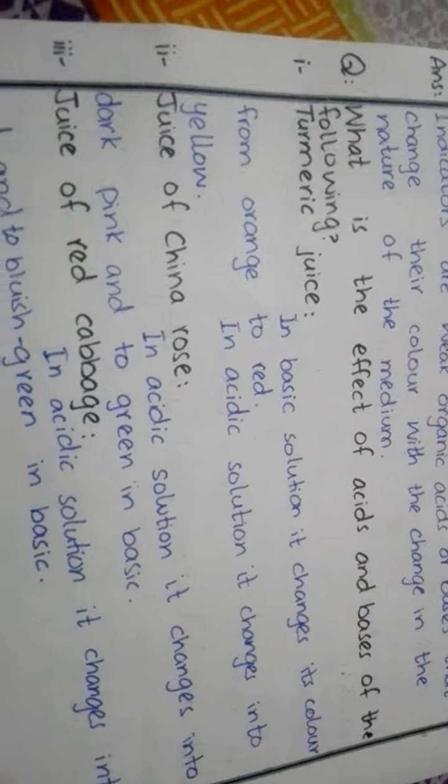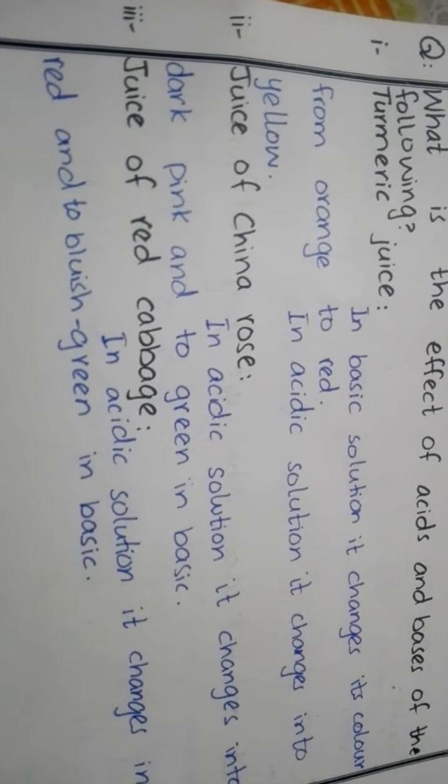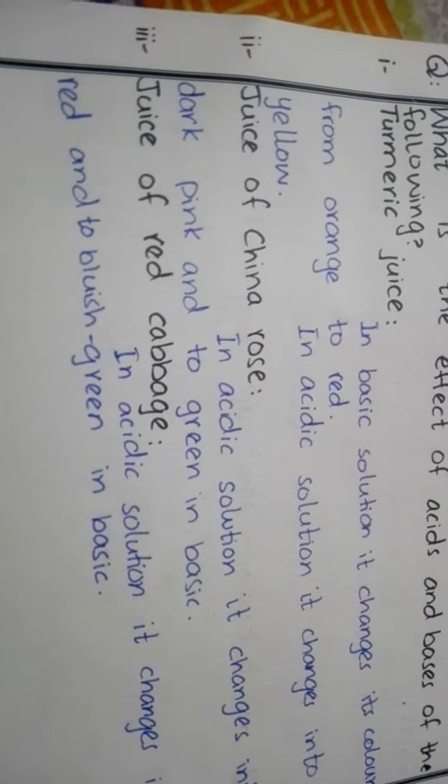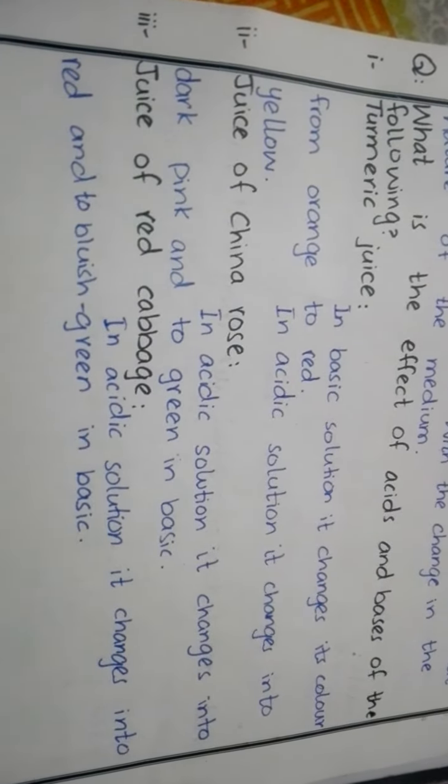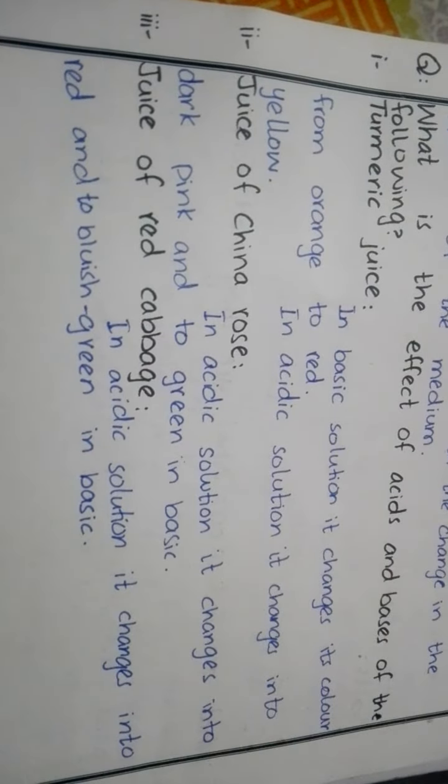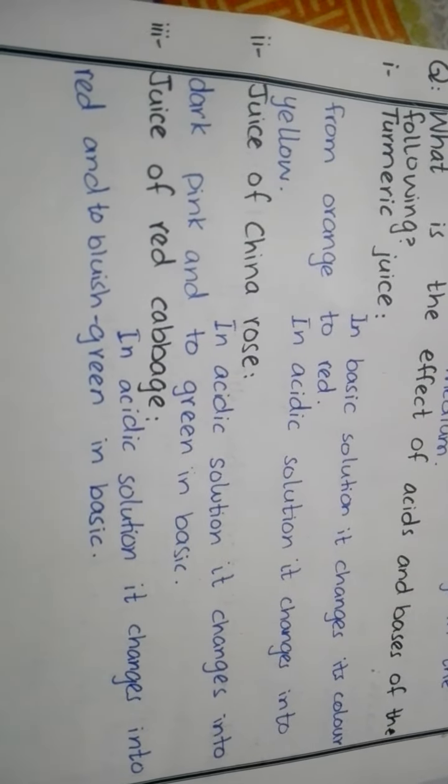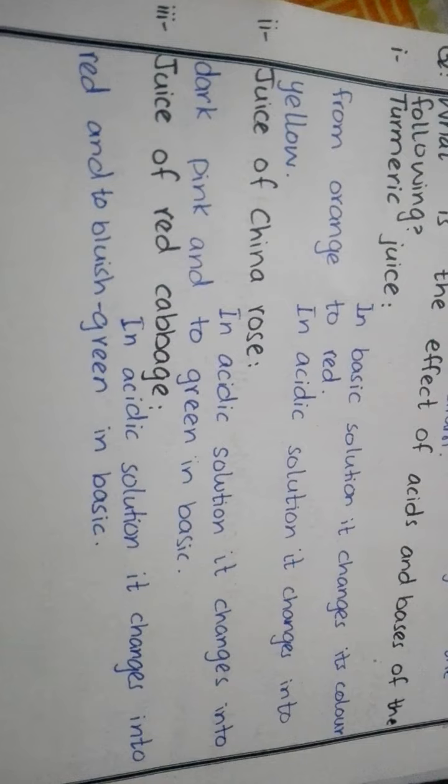Juice of China rose: in acidic solution it changes into dark pink and to green in basic. Juice of red cabbage: in acidic solution it changes into red and to bluish green in basic.